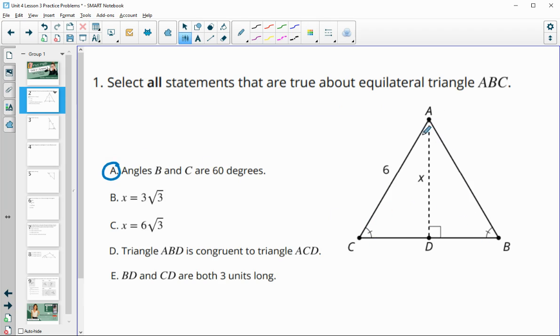So B and C are equal and so is this larger angle A. So if we do 180 divided by 3, we get 60 for each of those angles.